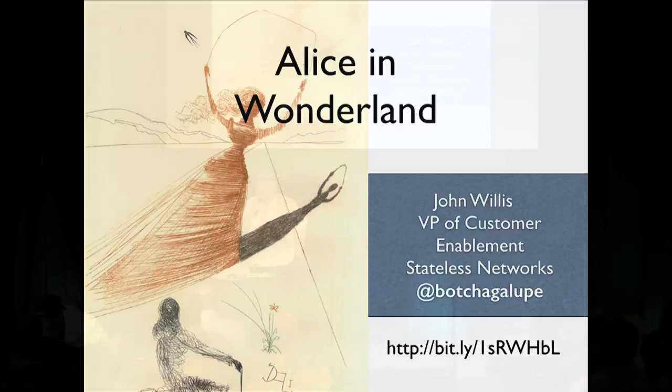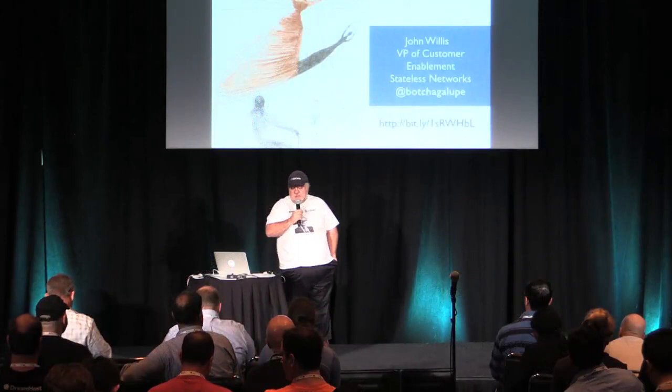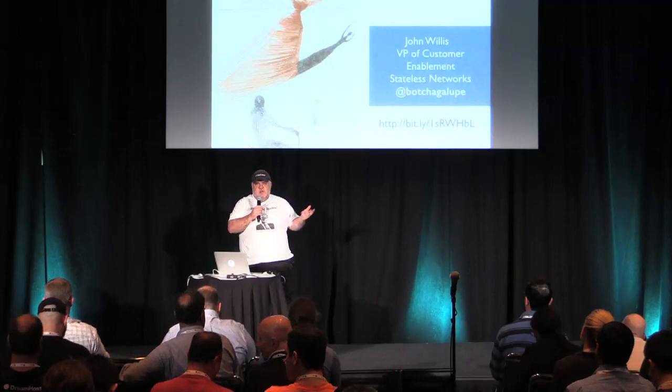Good morning, everybody. Thank you very much for attending. I think I've succeeded in tricking you guys to come here with a fancy title, so hopefully it's worth it. Alice in Wonderland: networking in DevOps with a splash of OpenStack. You'll get the picture in a little bit. My name is John Willis. I am a VP of Customer Enablement at a startup called Stateless Networks. You can find me as Botchigaloupe on Twitter — that's my kind of portal to life these days.